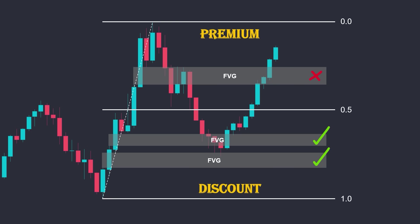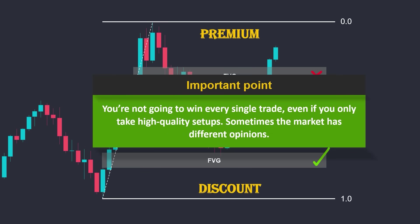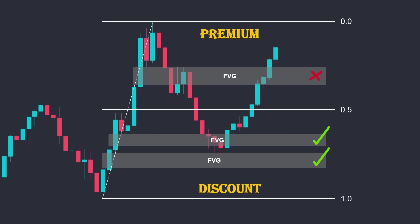It works best when the market is making deep retracements. But if we are witnessing an aggressive trend, buying in the premium side of the range can also be profitable. However, the important point here is that you're not going to win every single trade, even if you only take high-quality setups. Sometimes the market has different opinions. Even with a 30% win rate, you can be profitable as long as you have a solid risk management plan. You can't control the outcome of a single trade, but you can control the outcome with an overall good risk management plan. As long as you take high-quality setups and stick to your rules, you will be fine.